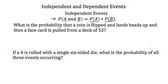The probability of flipping a coin and landing heads up — there are 1 of 2 outcomes for flipping a coin, heads or tails — so landing heads up would be 1 out of 2. The probability of pulling a face card from a deck of 52: there are 12 face cards out of a total of 52 cards in the deck, so that probability is 12 out of 52.